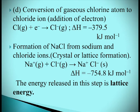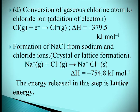Chlorine gas is converted into chloride ion and energy is released, so the electron gain enthalpy is −379.5 kJ/mol. The formation of sodium chloride from sodium and chloride ions — the lattice formation energy — gives Na⁺(g) + Cl⁻(g) → Na⁺Cl⁻(s), ΔH = −754.8 kJ/mol. The energy released in this step is the lattice energy.